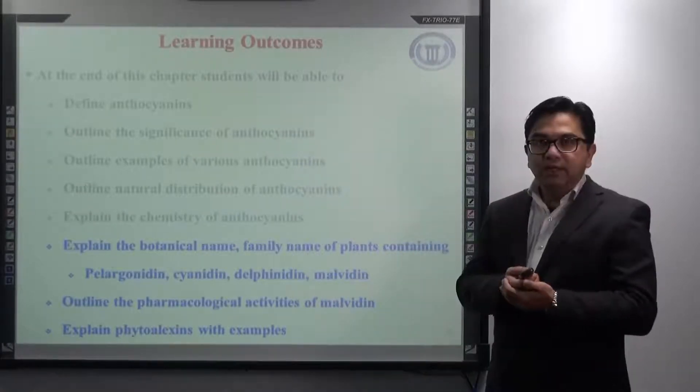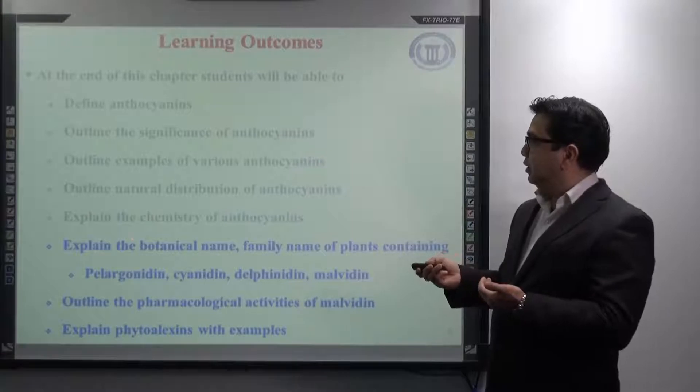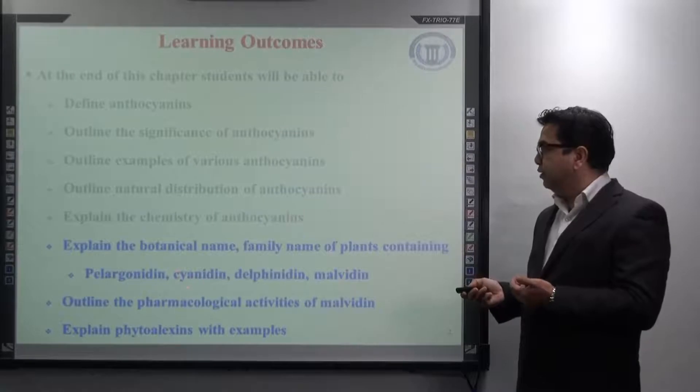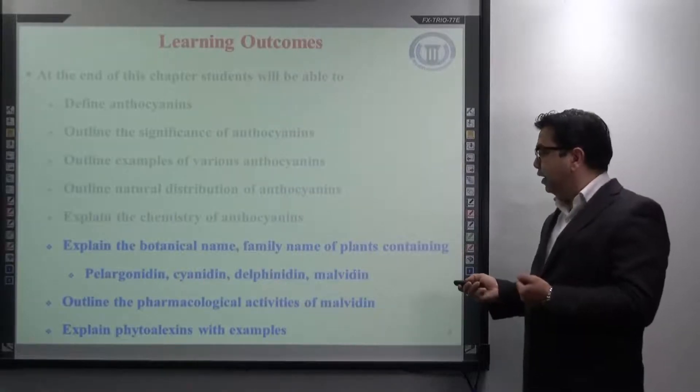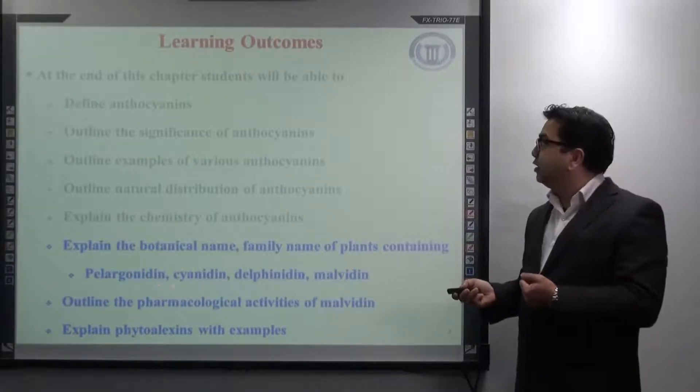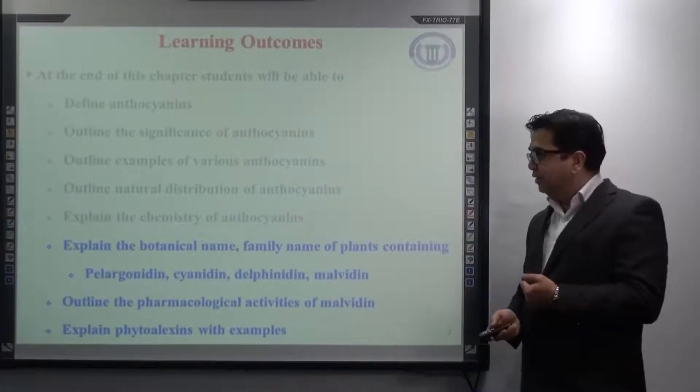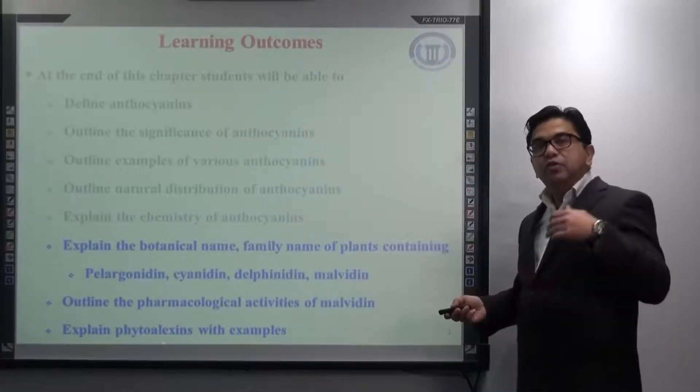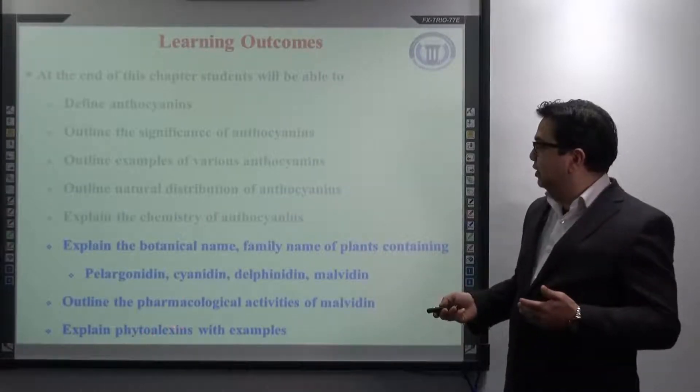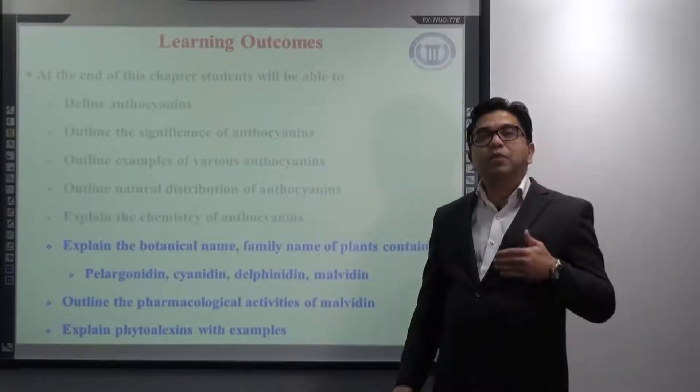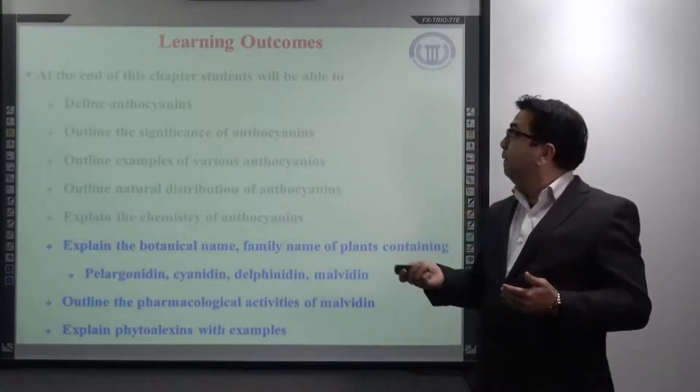This lecture mainly we will discuss the botanical name, family name of plants containing pelargonidin, cyanidin, delphinidin and malvidin. Also at the end of this lecture we will be able to outline the pharmacological activities of malvidin and explain phytoalexins with examples.